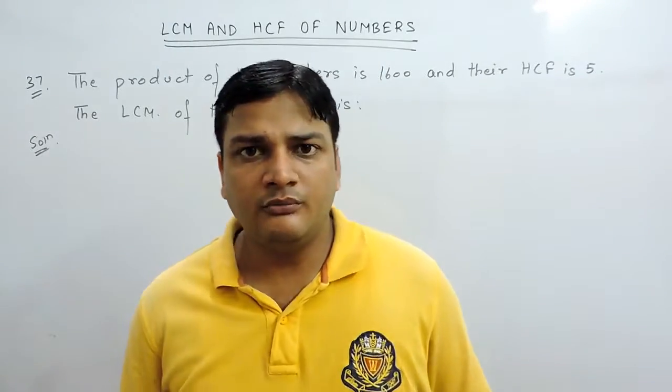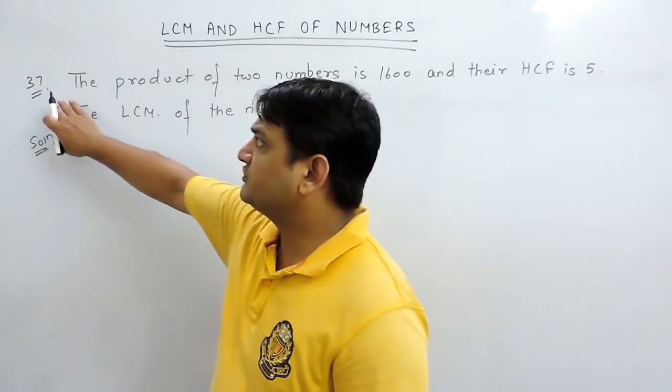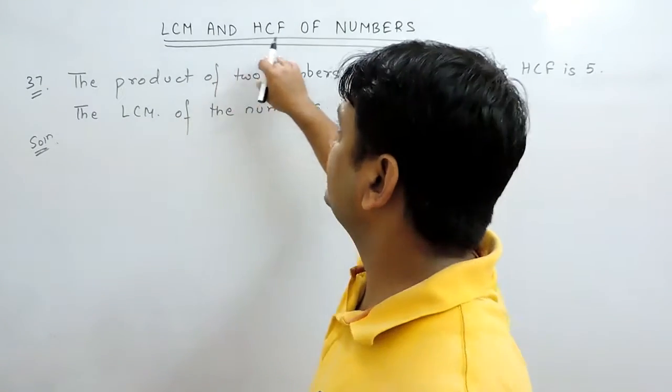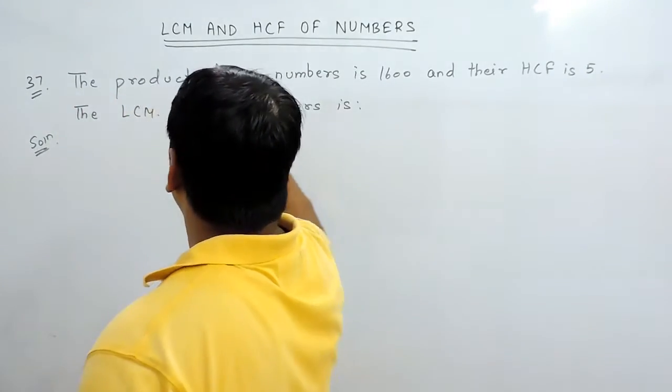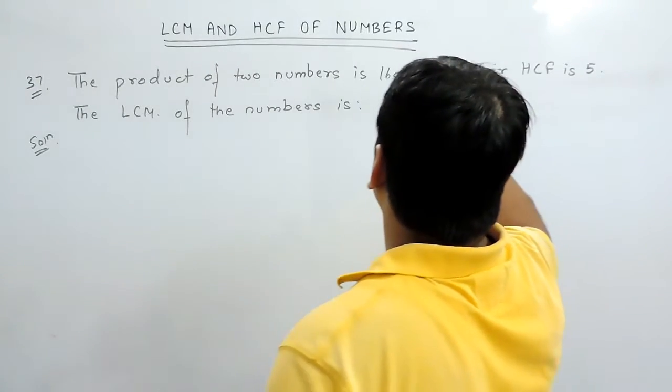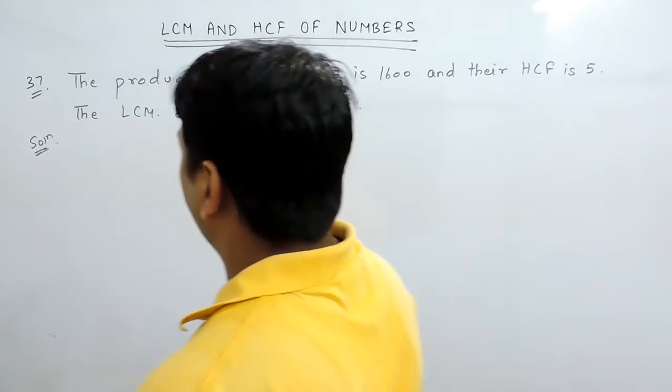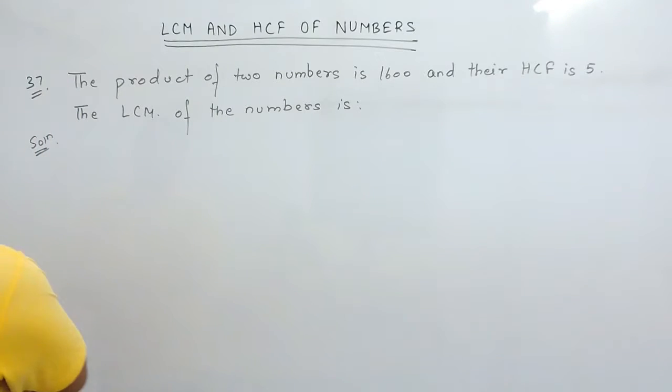Hello, I am Arun Malik and today I am going to solve question number 37 of LCM and HCF of numbers. The question is: the product of two numbers is 1600 and their HCF is 5. The LCM of the numbers is?